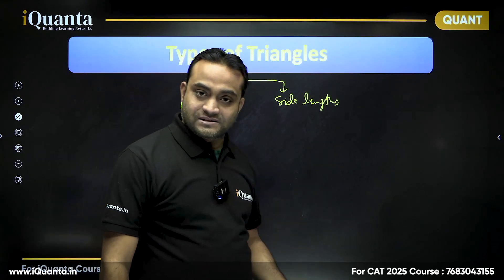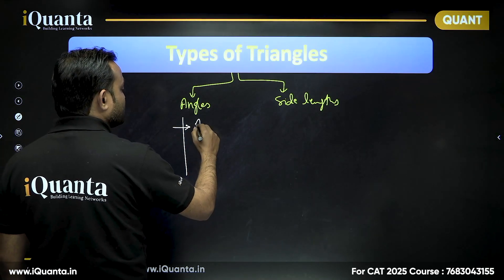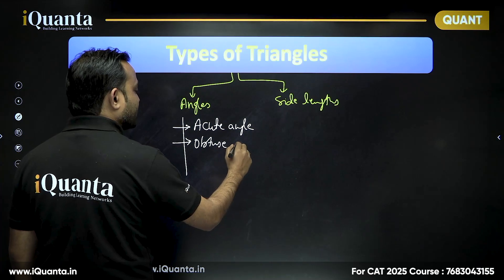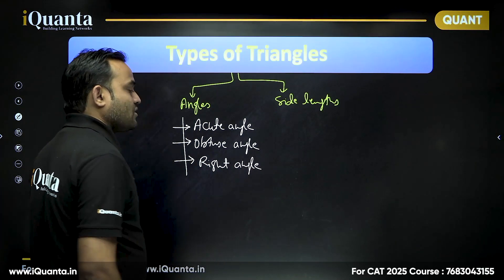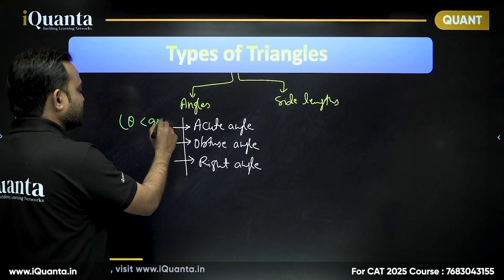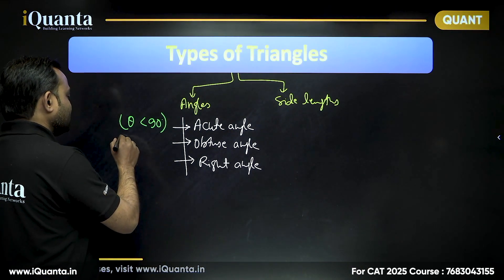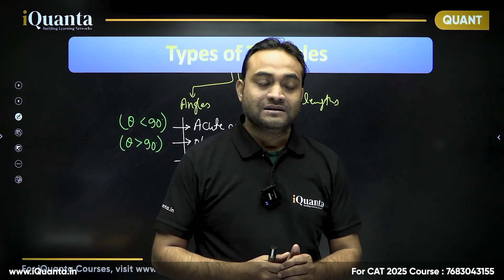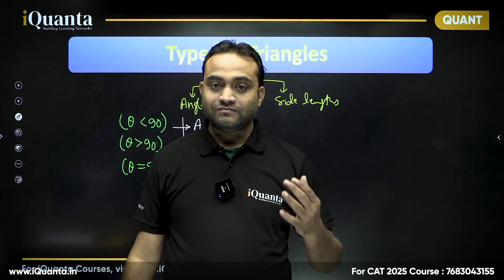If we talk about angles, there are three different kinds of triangles. The first is an acute angle triangle, the next is an obtuse angle triangle, and the last is a right angle triangle. Any triangle where all the angles are less than 90 degrees is known as an acute angle triangle. Any triangle where one of the angles is greater than 90 degrees is known as an obtuse angle triangle. And if one of the angles is equal to 90 degrees, we call it a right angle triangle.